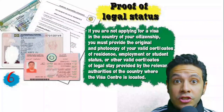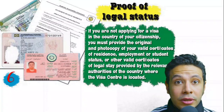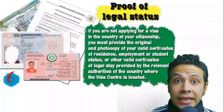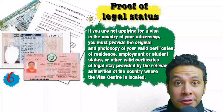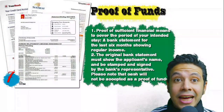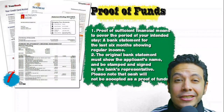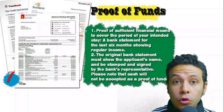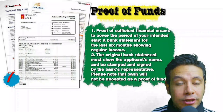In some cases you may be applying from a country different than your own — you will need to provide proof of legal residence in that country, and in some cases a valid residence visa can also be accepted. You will also need to provide proof of sufficient funds: a bank statement showing your balance for at least six months, signed and stamped by the bank. Cash will not be accepted as proof of funds.